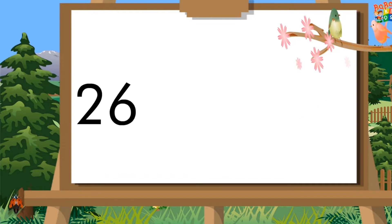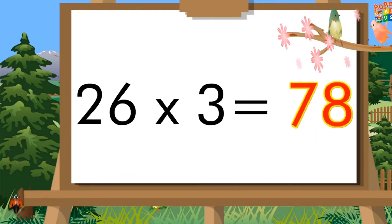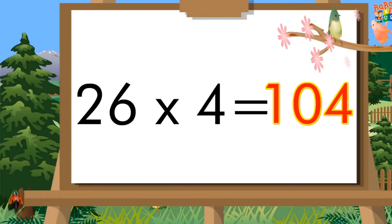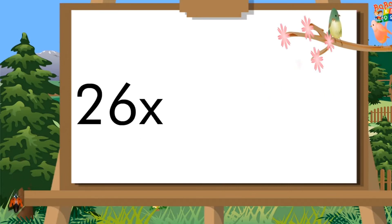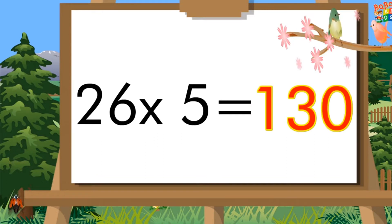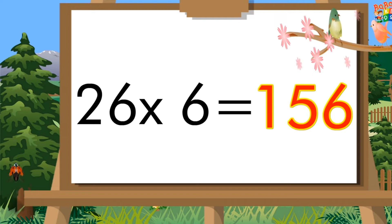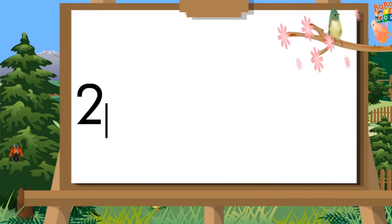26 times 3 is 78. 26 times 4 is 104. 26 times 5 is 130. 26 times 6 is 156.